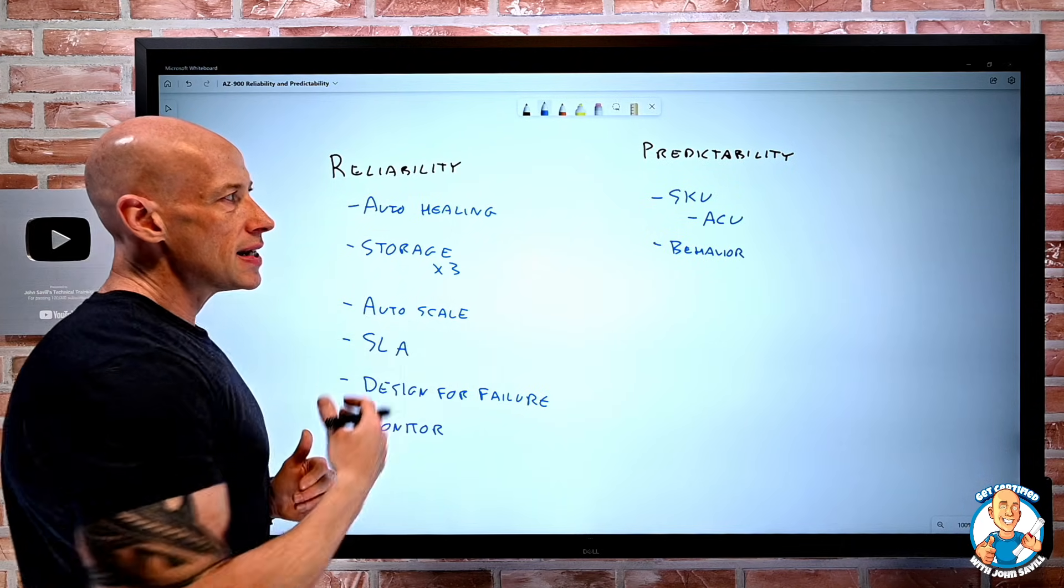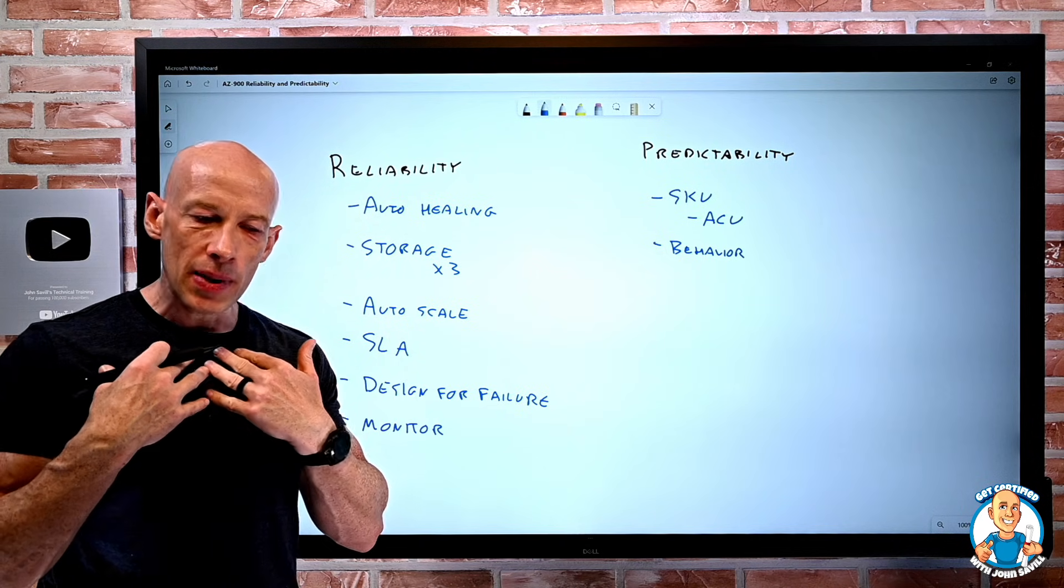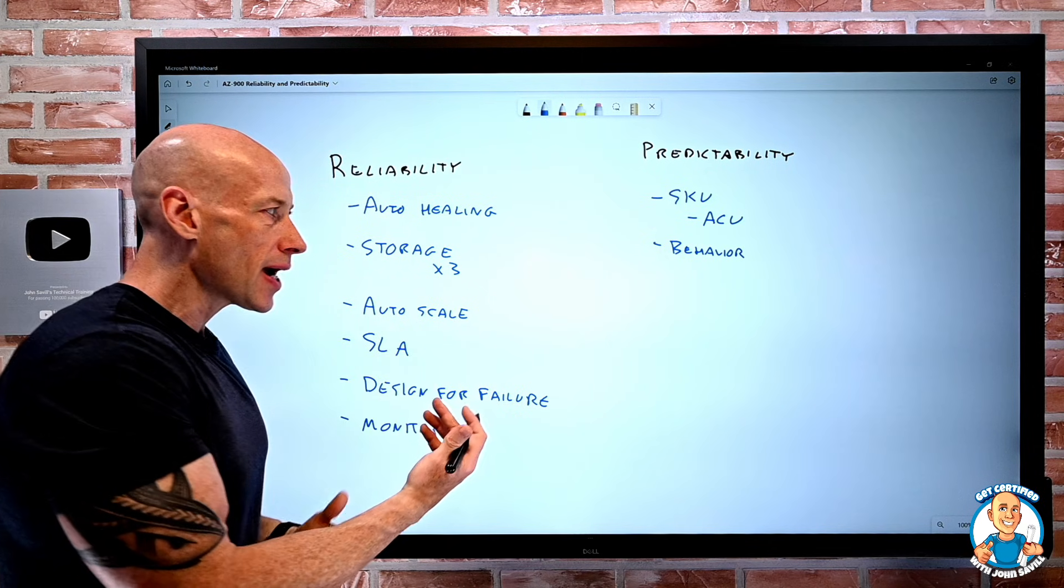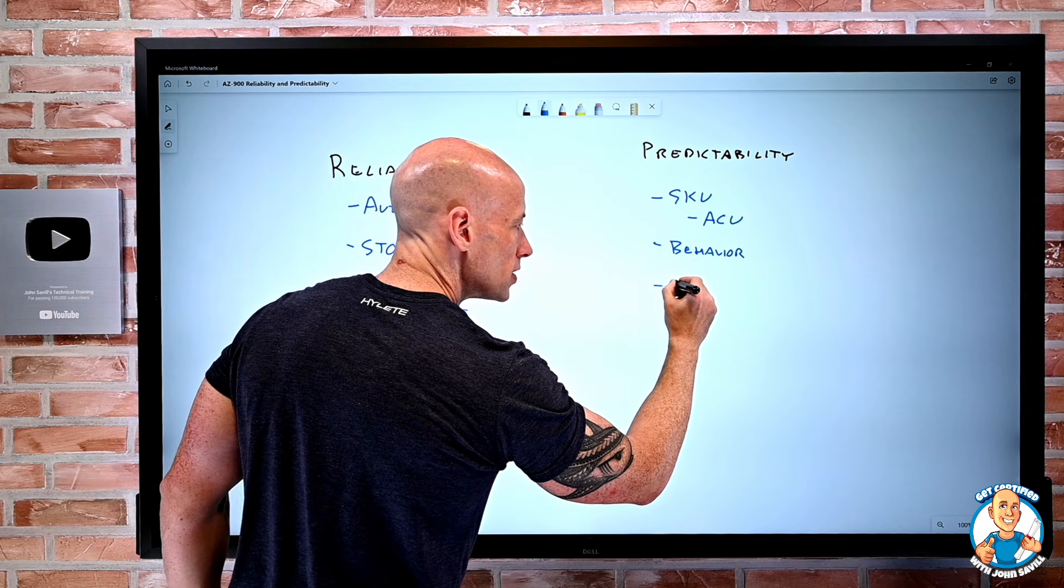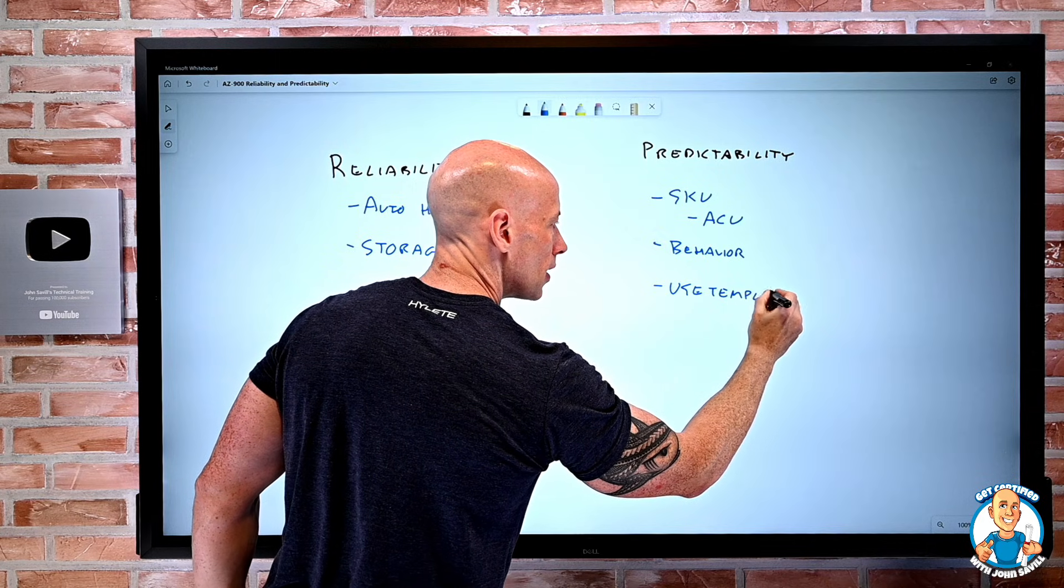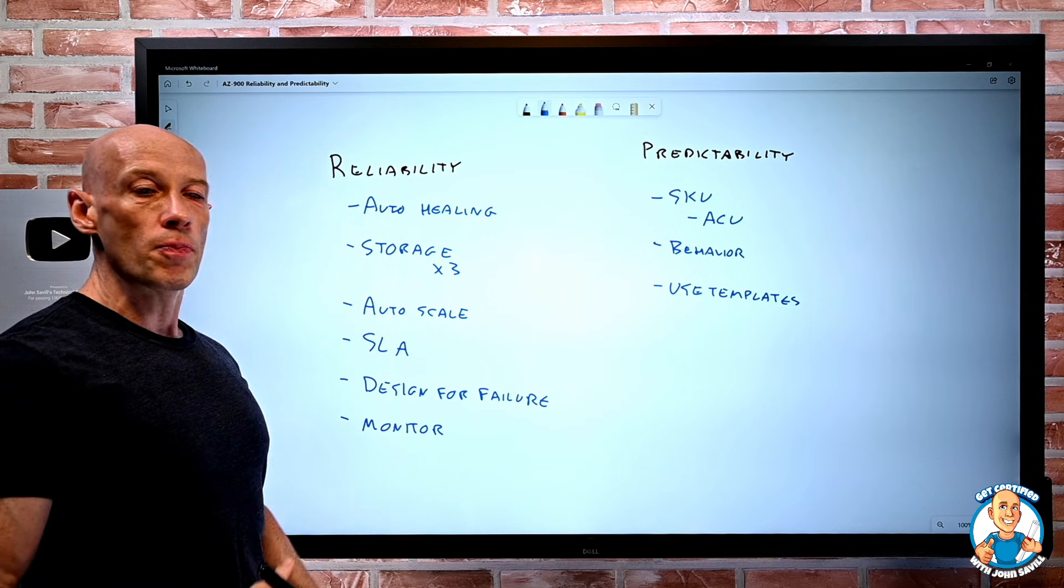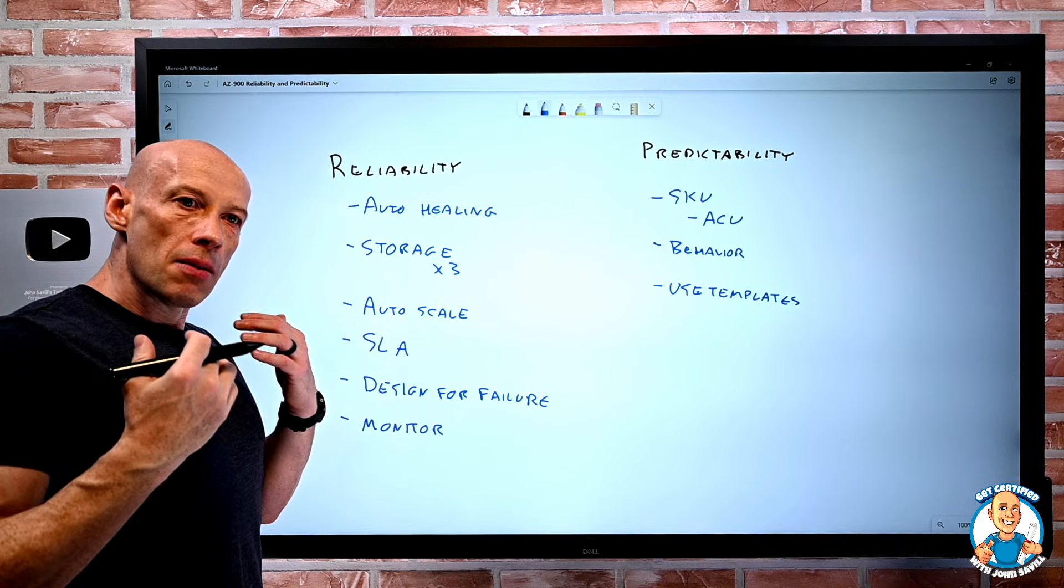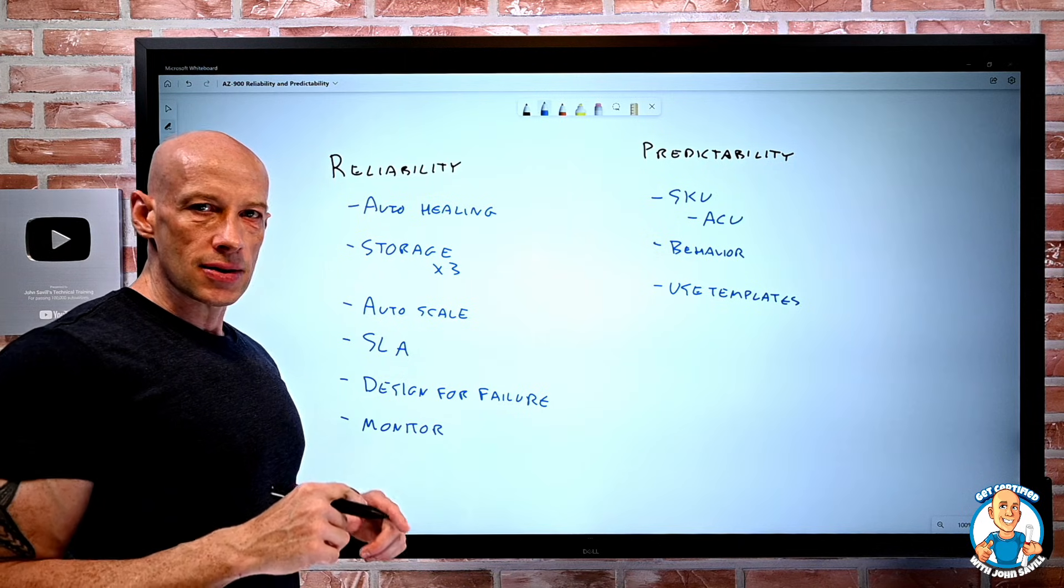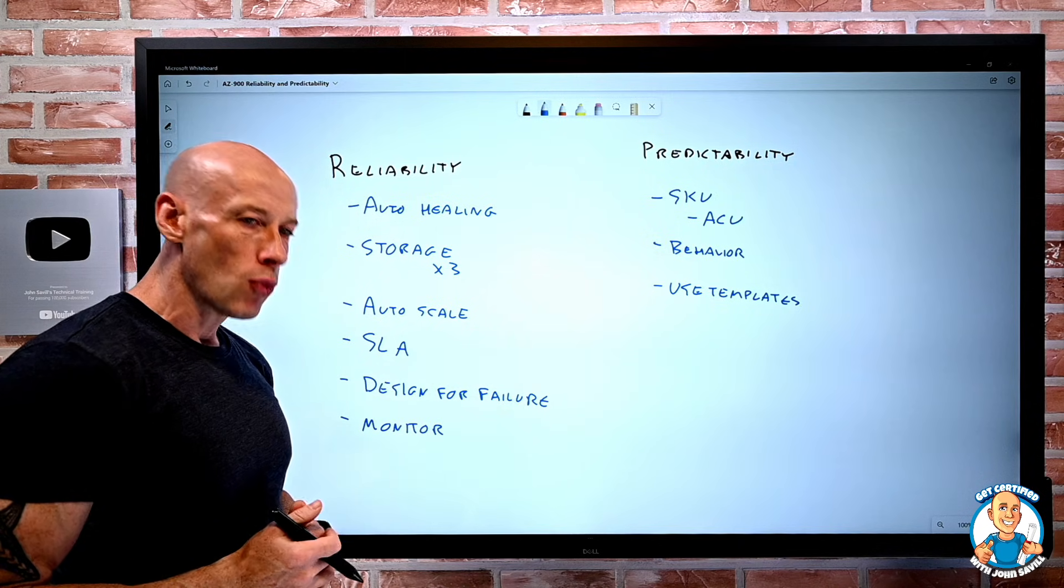Now, some of this reliability comes into that predictability aspect, but we have to be predictable as well. So what that means is in our interactions, I want to use templates when I do deployments. This could be a JSON template. It could be a BICEP file. It could be a Terraform file. But I want to use that declarative nature to deploy what I want. I don't want to be clicking buttons. I want predictability. I want to make sure things always deploy the same way.